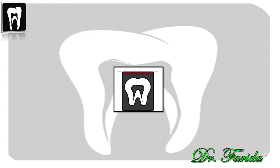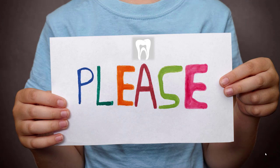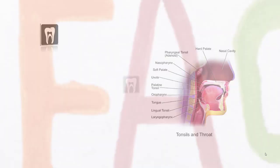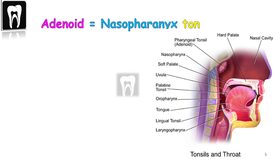Hi there, I'm Freda. Welcome to Dental Radiology. The adenoids are glands in the roof of the nasopharynx — they are also called the nasopharyngeal tonsils.